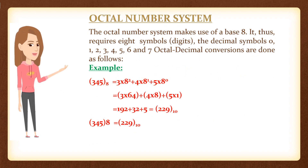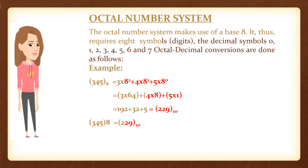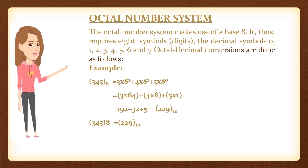Octal number system. The octal number system makes use of a base 8. It thus requires 8 symbols (digits) — the decimal symbols 0, 1, 2, 3, 4, 5, 6 and 7. Octal to decimal conversions are done as follows.